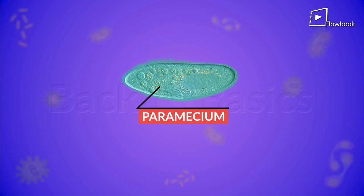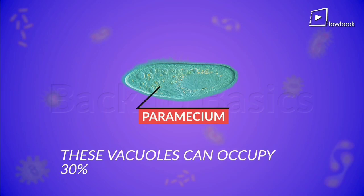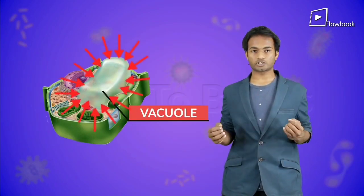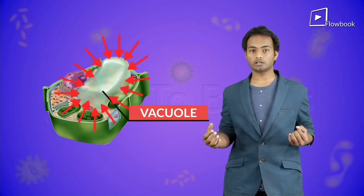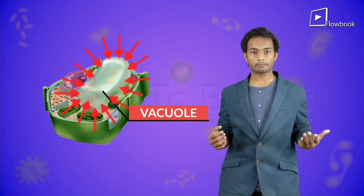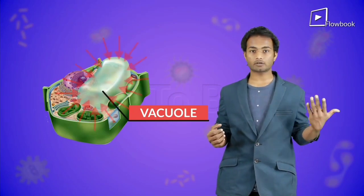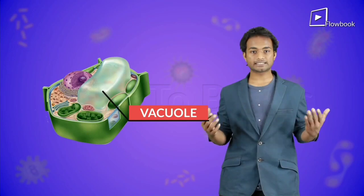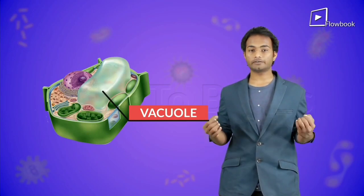If you look at them, they look something like water balloons. They might look small here, but sometimes these vacuoles can occupy 30 to 90 percent of the cell's volume. These vacuoles control the turgor pressure, which is basically the pressure that is applied on the cell by the cell's contents.